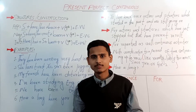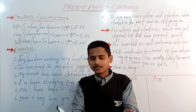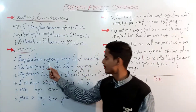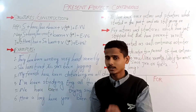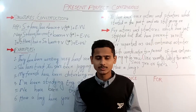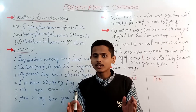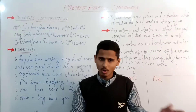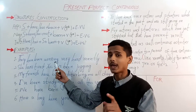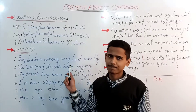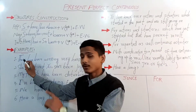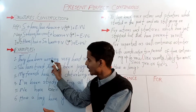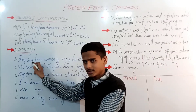Now let's look at the example sentences on the board. The first one is: 'They have been working very hard recently.' Note that you don't necessarily have to put 'since' or 'for' to complete the structure — the sentence still belongs to present perfect continuous. The word 'working' shows continuity, while 'have' shows the perfect aspect.